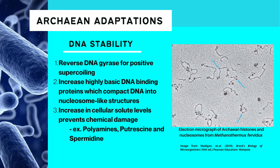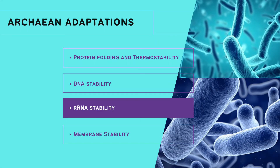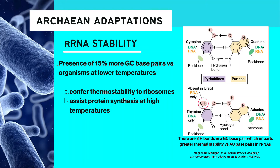Solutes such as putrescine and spermidine stabilize both nucleic acids and ribosomes in hot conditions. Another adaptation is achieving ribosomal RNA stability. Guanine and cytosine-based pairs have three hydrogen bonds, while uracil and adenine-based pairs have two. Thus, the presence of around 15% more guanine-cytosine-based pairs in hyperthermophilic and thermophilic organisms is said to be an adaptation that confers thermostability to the ribosomal RNA and the whole ribosome. This assists protein synthesis under high-temperature conditions.